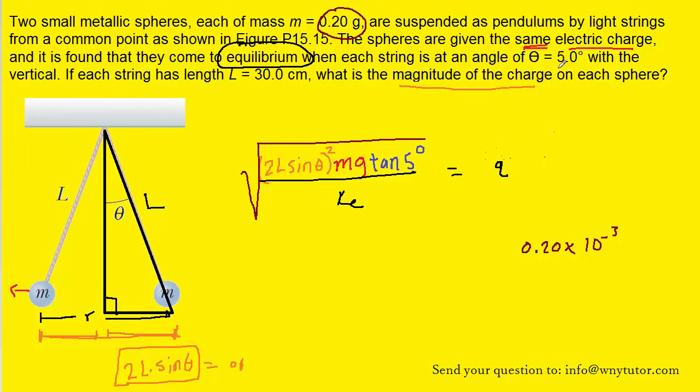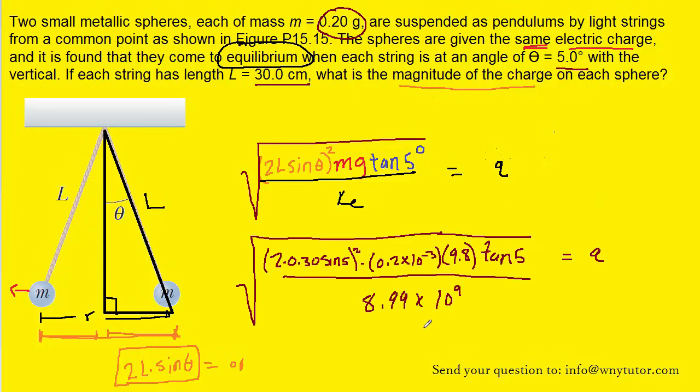L was the length of the string, which is given in 30 centimeters. We've got to make sure to change that into meters, so that'll become 0.3 meters. And then K is the Coulomb constant, and that is always equal to 8.99 times 10 to the ninth. So let's plug in all the known values. And when you do that, you should get approximately 7.2 times 10 to the minus 9, and that will be in Coulombs, because that's the unit of charge.